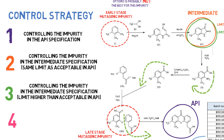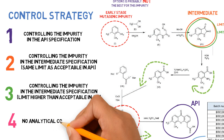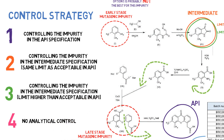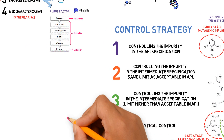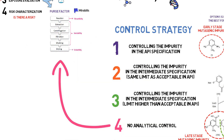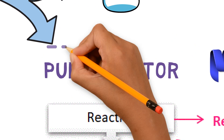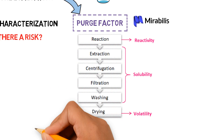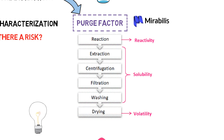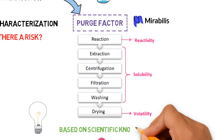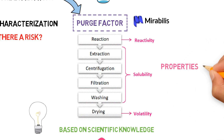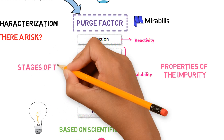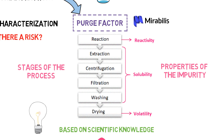Option 4: By using this option, no control in routine is needed, neither in the API nor in the intermediate. It ensures that the impurity will be adequately removed from the process by calculation of a purge factor, which can be supported by spike and purge studies. This is the option that gives the best assurance of compliance for all batches because it is based on scientific knowledge about the manufacturing process. By knowing properties of the impurity, such as reactivity, solubility, and volatility, and stages of the process where these properties are able to separate the impurity from the API, the purge factor can be calculated.